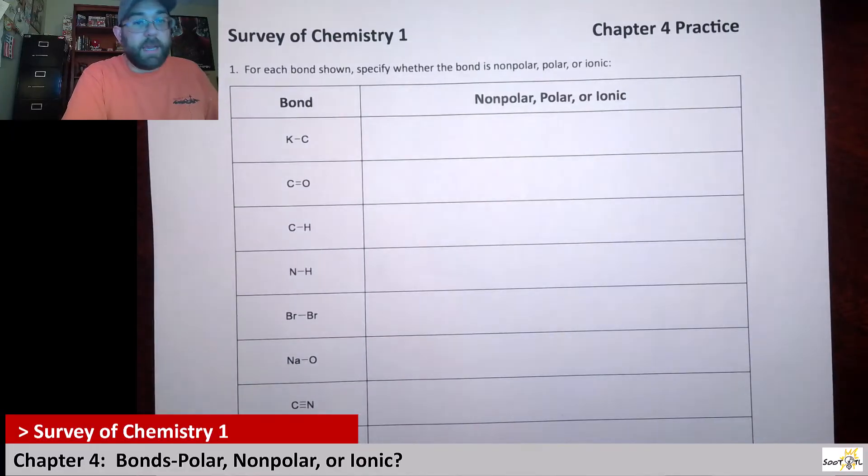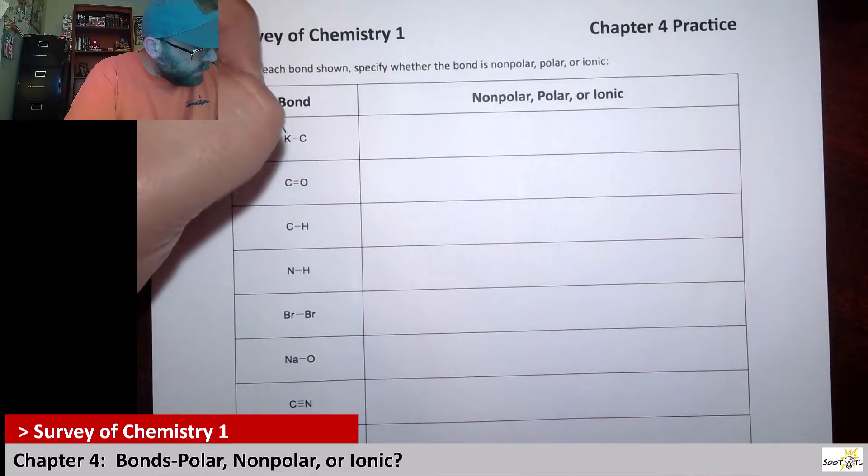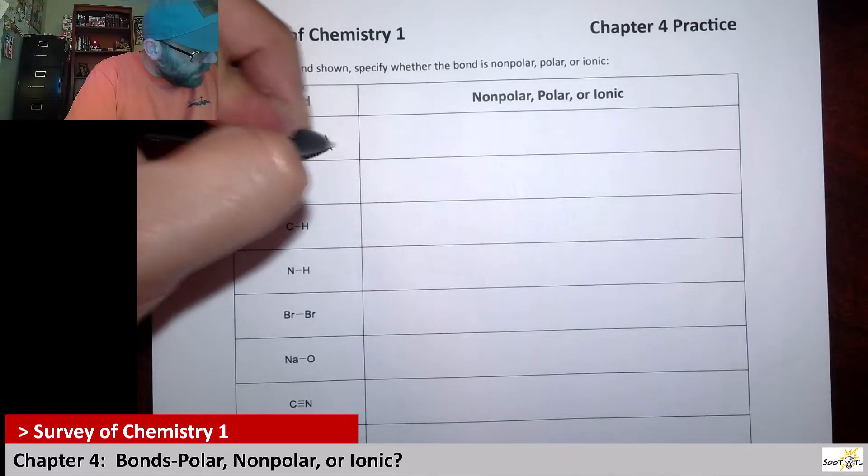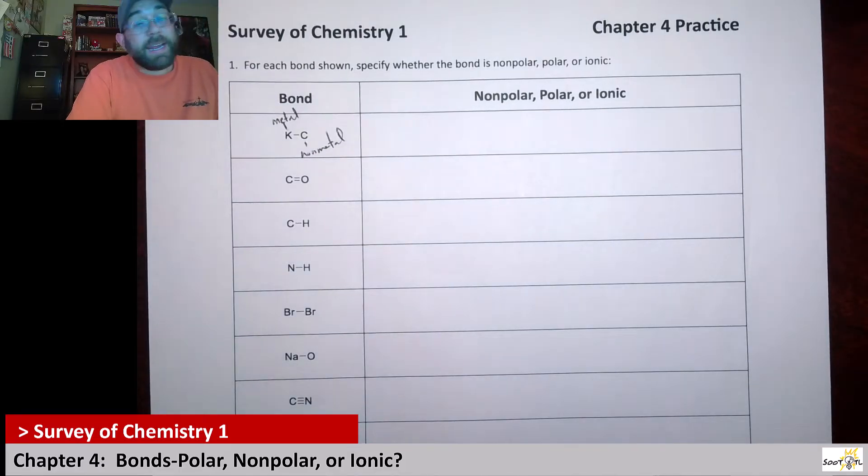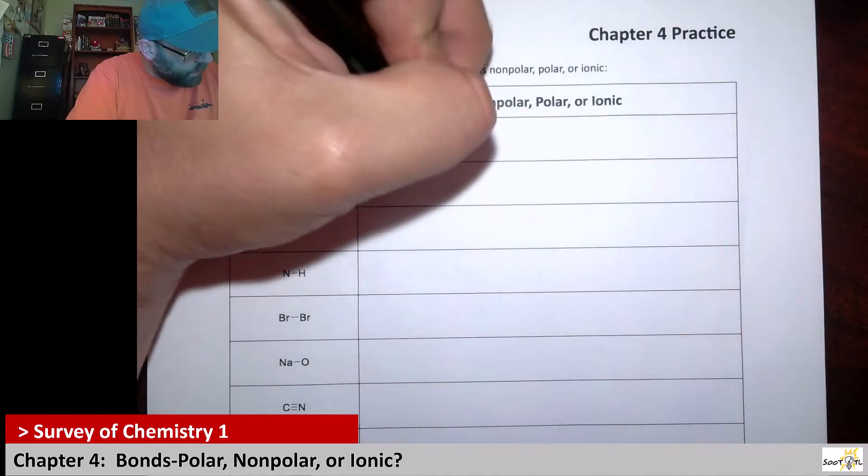Here we have potassium and a carbon with a bond. So this is a metal and this is a nonmetal. Anytime we see a metal and a nonmetal, it's pretty much a given that it's an ionic bond.